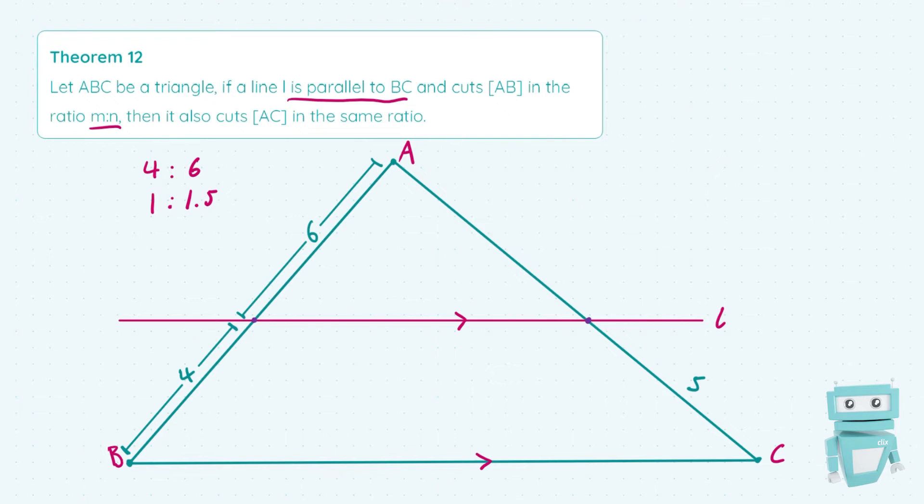All this theorem states is that this ratio is the same on the side AC as well as on the side AB. So we know that the length from C to where L cuts AC is 5, and therefore to find the last remaining length here on the right-hand side, we're going to represent it as a ratio 5 is to 1.5 times 5, because this is how we multiply in ratios.